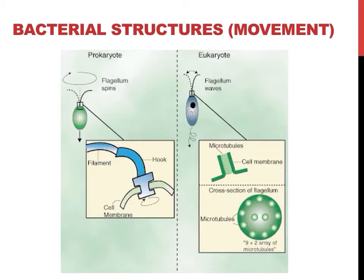That is not to suggest that prokaryotes are the only organisms capable of movement using cilia or flagella. Many eukaryotes also contain cilia and flagella, but they are considerably different and considerably more complex. Human sperm cells would provide an example of a eukaryote that has a flagellum. If you ever see a flagellum or cilia described as having a 9-plus-2 structure, it refers to eukaryotes and the microtubule arrangement of a more complex organelle.